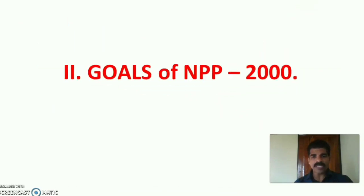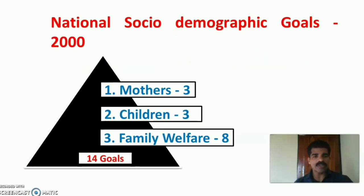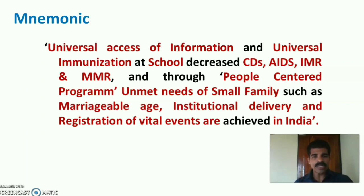The National Sociodemographic Goals of National Population Policy 2000 total 14 goals: three related to mothers, three to children, and eight to family welfare. The mnemonic covers: universal access of information, universal immunization, school education, decreased communicable diseases, AIDS containment, infant mortality rate, maternal mortality rate, people-centered program, unmet needs of small families, marriageable age for girls, institutional delivery, and registration of vital events in India.